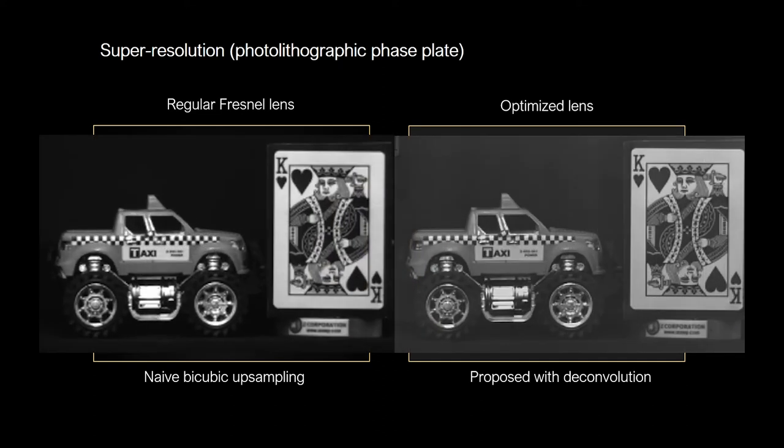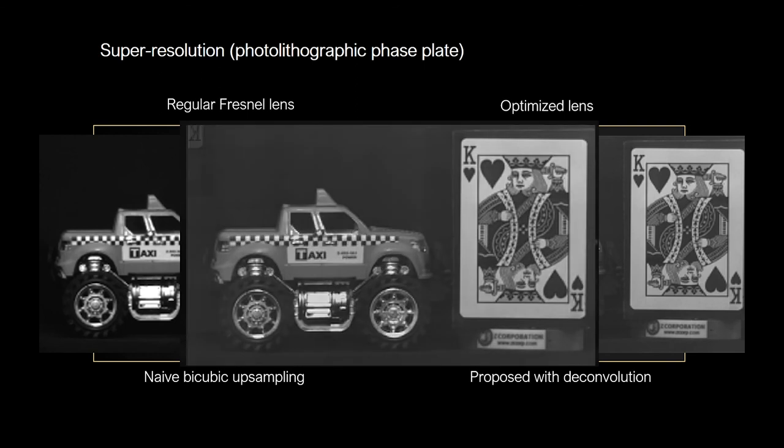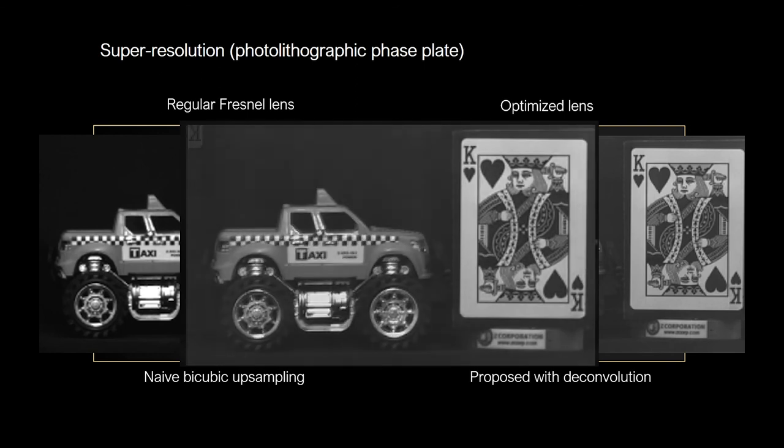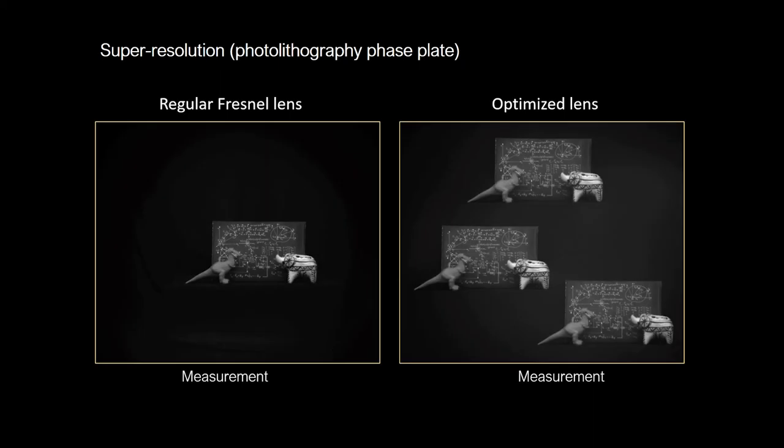The prototype lens was fabricated with photolithography and outperforms digital zoom techniques in real-world captures. Here we have overlaid a Fresnel lens image with bicubic upsampling and the optimized lens with deconvolution. Here is an additional example captured with the same setup.